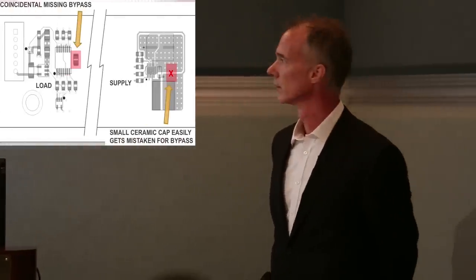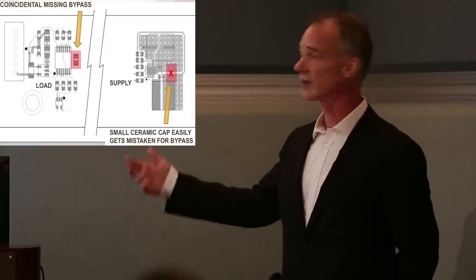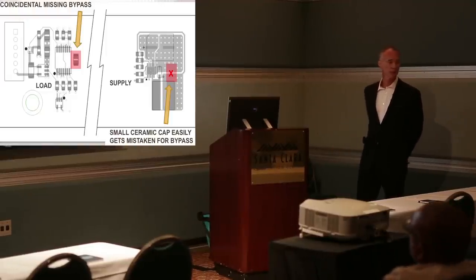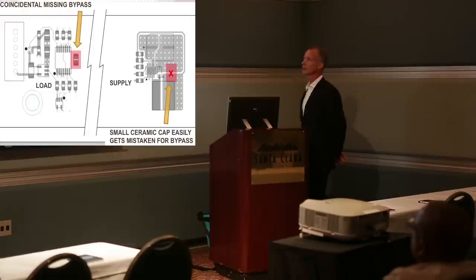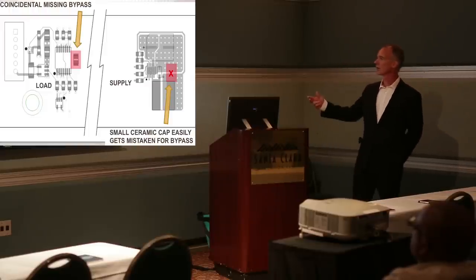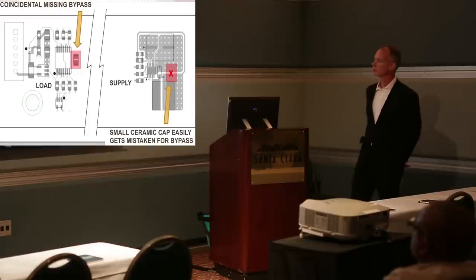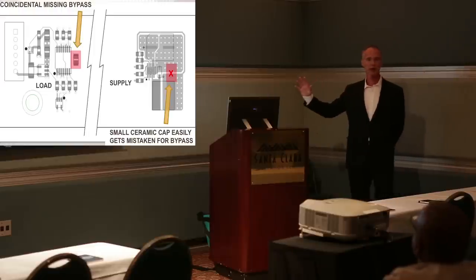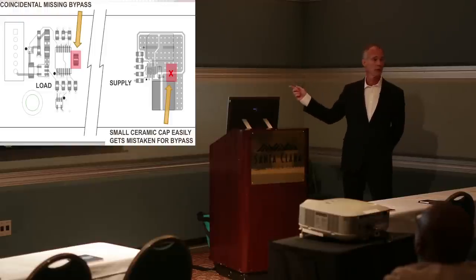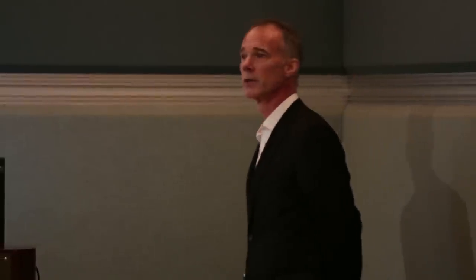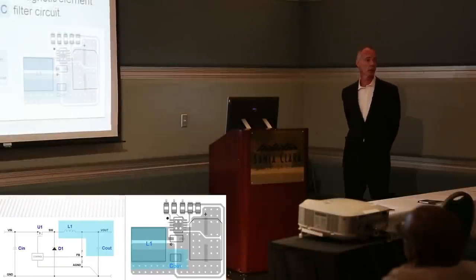Placing C-out at the load may be the worst layout mistake. When using multiple series pass elements, C-out often decreases in size to a small ceramic cap, and if not identified early it can be mistaken for a missing bypass cap elsewhere on the board. Without C-out in the right location, you lose the ability to filter voltage ripple at the output — the switching frequency ripple will appear across the entire voltage plane and on all signals on that rail. C-out belongs right next to the magnetic element forming the LC filter.